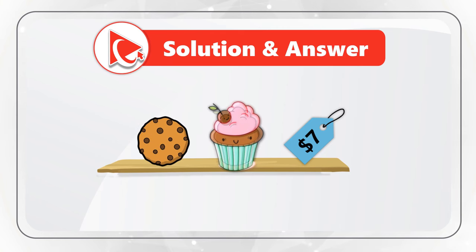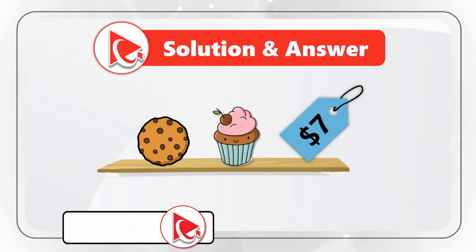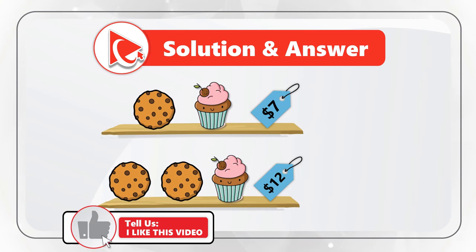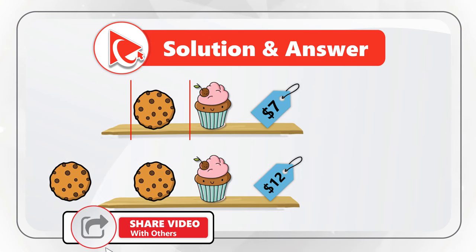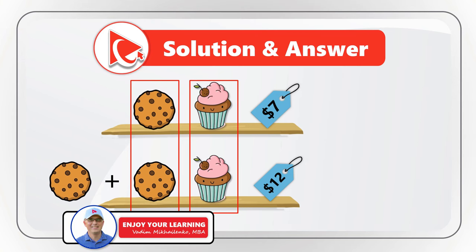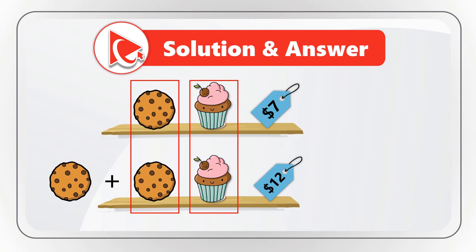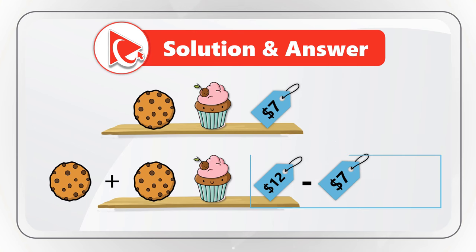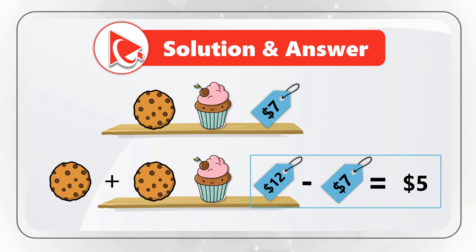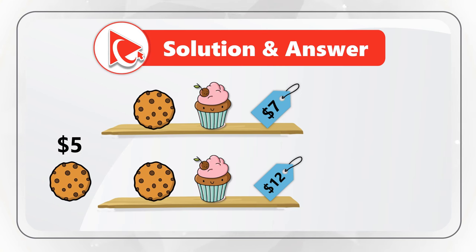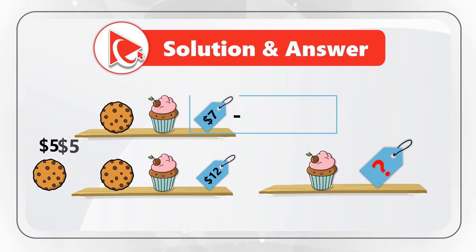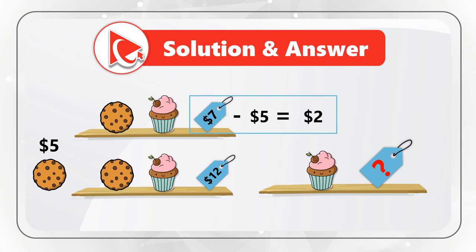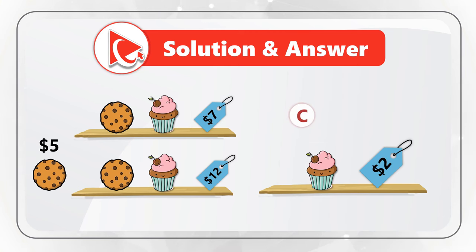Take a close look at the first set — cookie plus cupcake costs $7. The second set already includes the first set plus an extra cookie. Subtracting $7 from $12 gives the cookie price of $5. Then subtracting $5 from $7 gives the cupcake price of $2. So the correct answer is Choice C, $2.